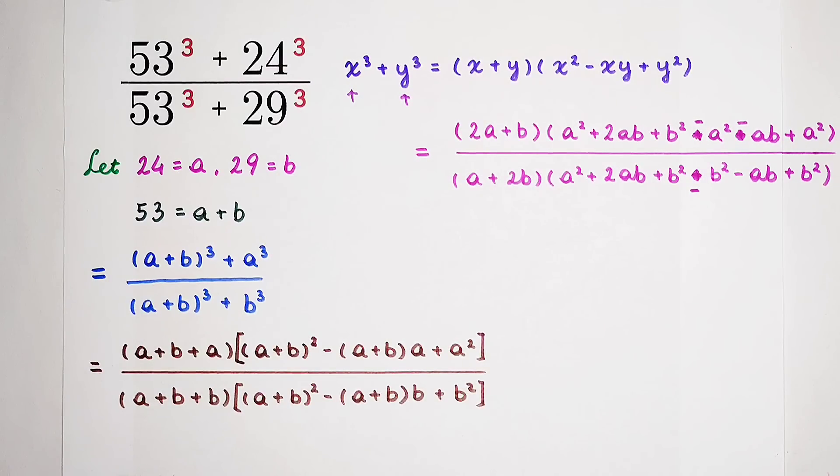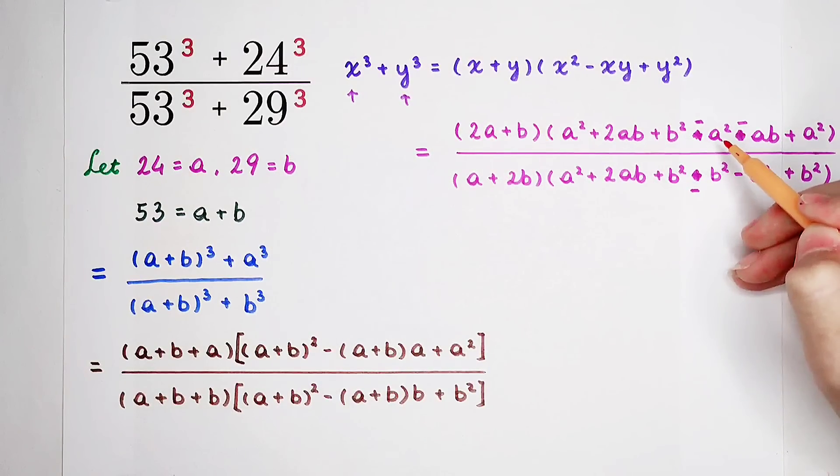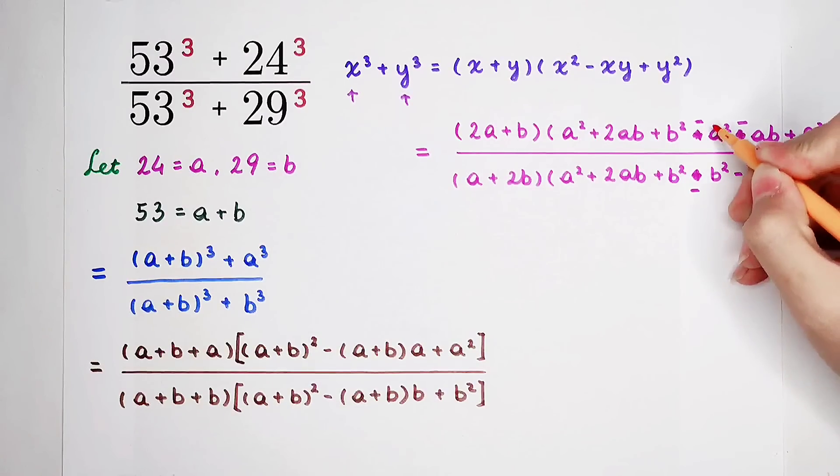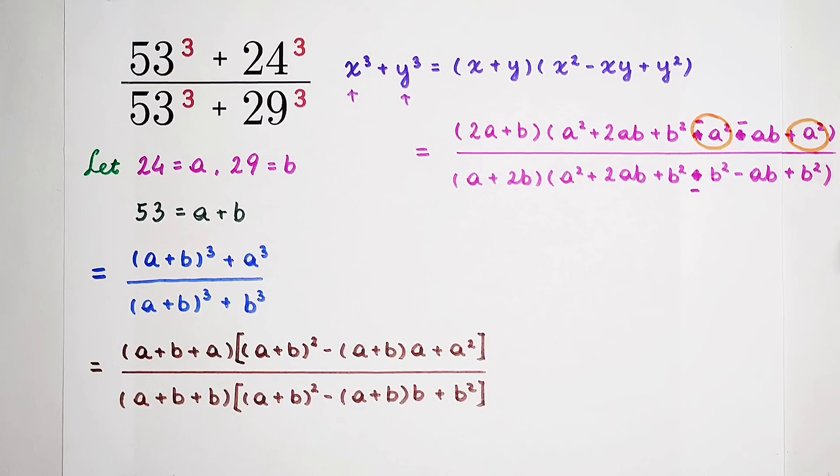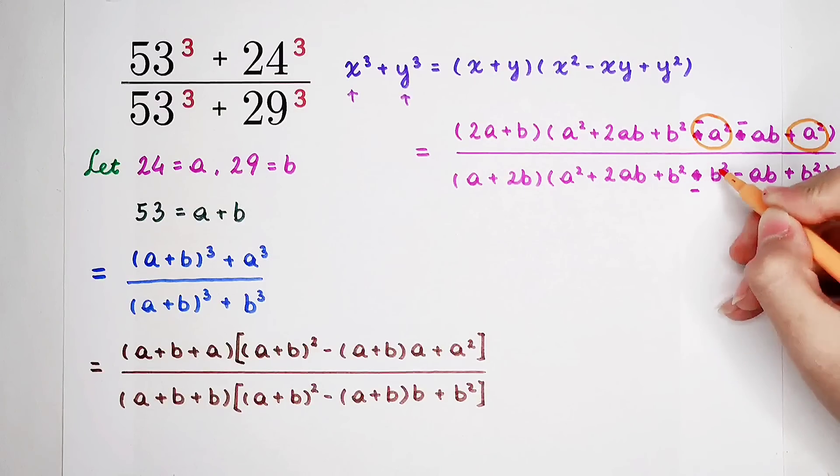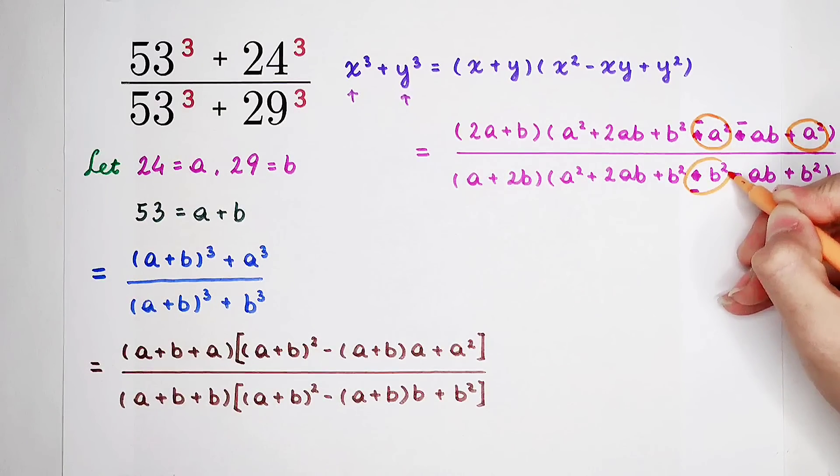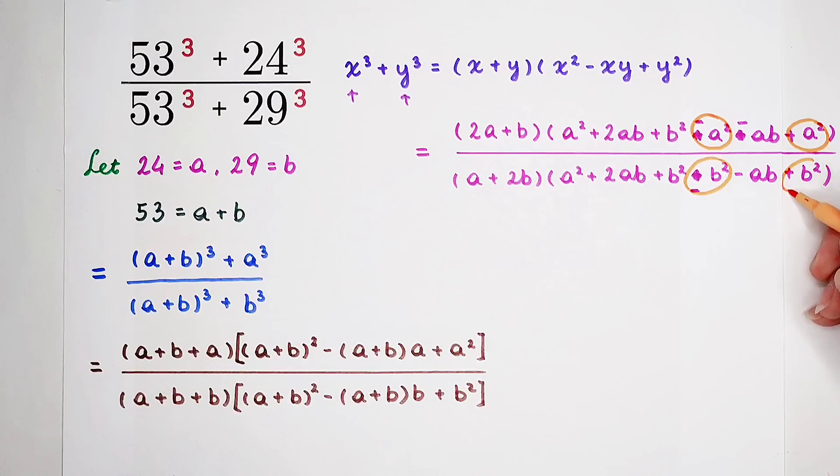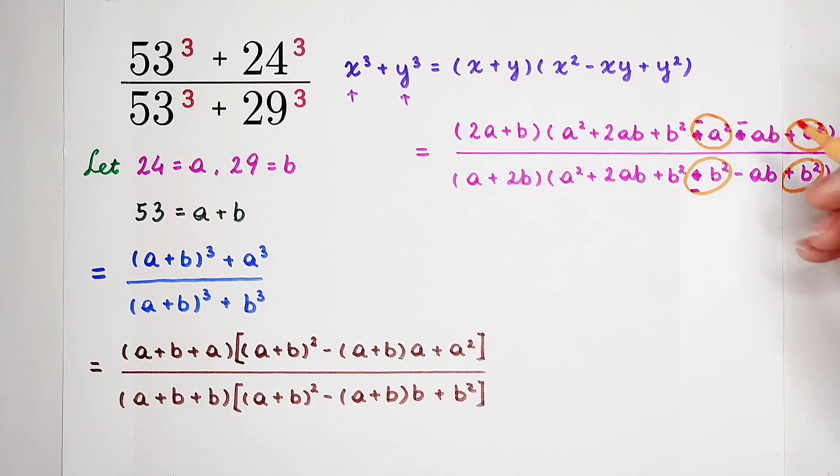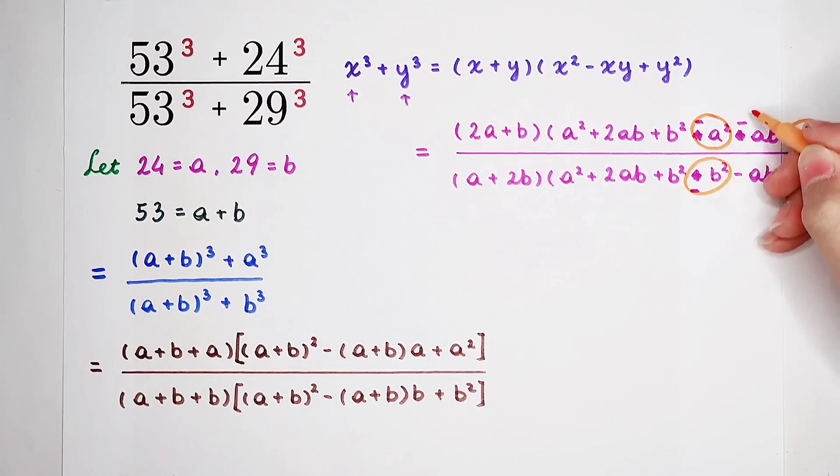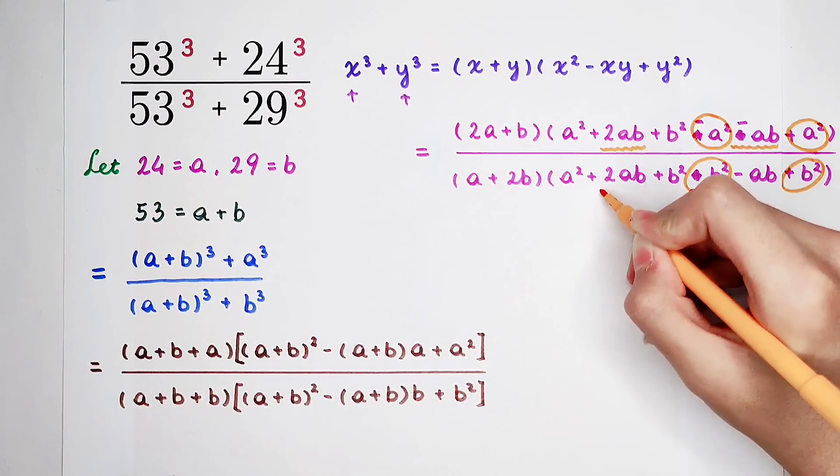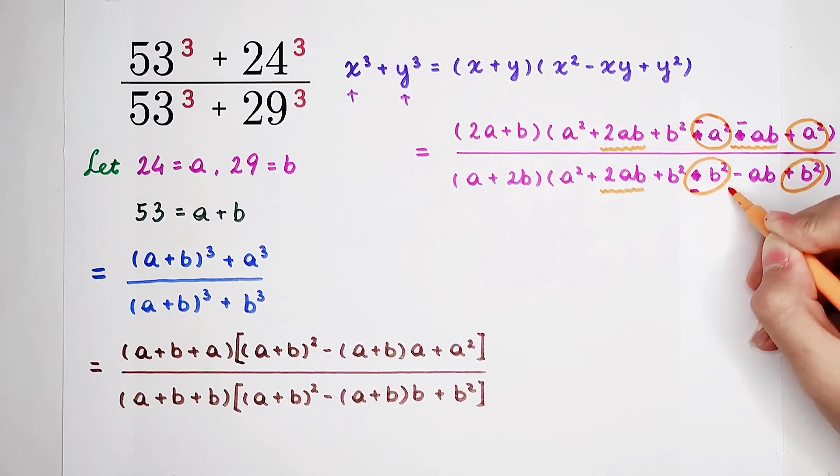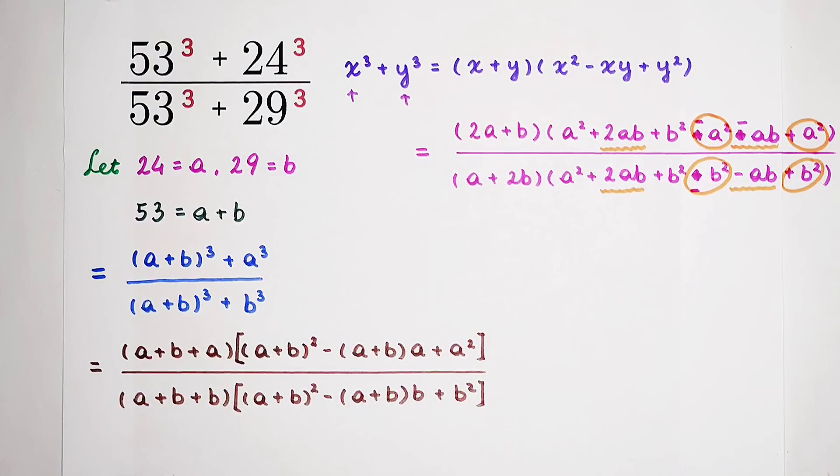Now, many terms can cancel each other. For example, this negative a squared. And here is a positive a squared. Here is a negative b squared. And here is a positive b squared. Here is a negative ab, but here plus 2ab. So, it is plus ab. Plus 2ab minus ab plus ab left.